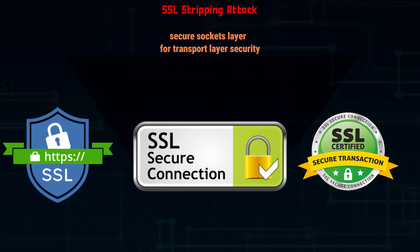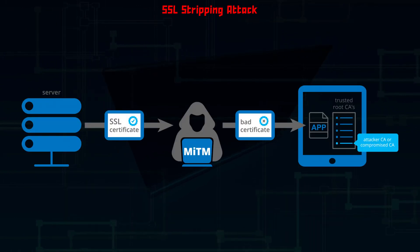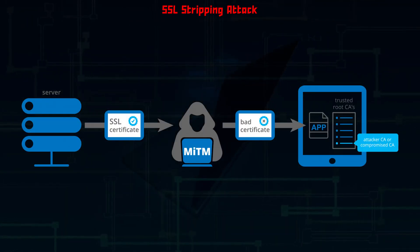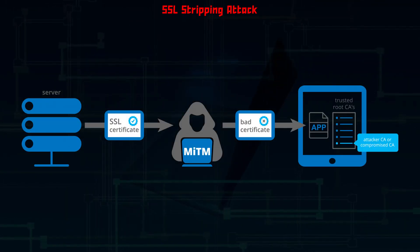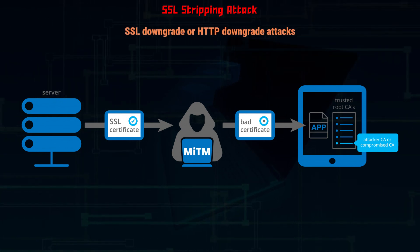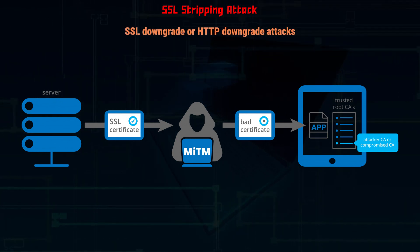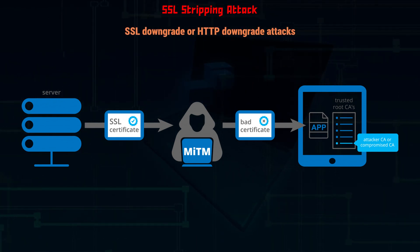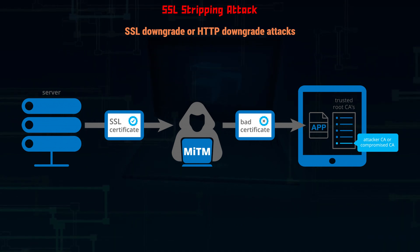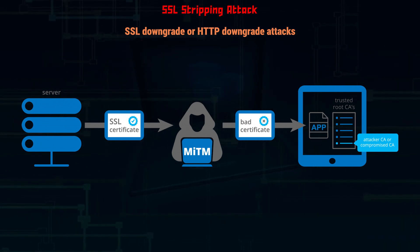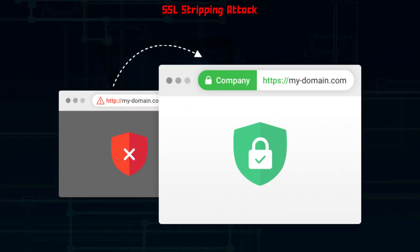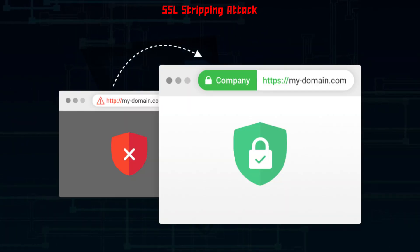SSL stripping attacks, also known as SSL downgrade or HTTP downgrade attacks, are a type of cyber attack in which hackers downgrade a web connection from the more secure HTTPS to the less secure HTTP.